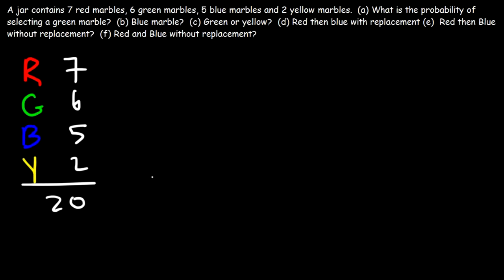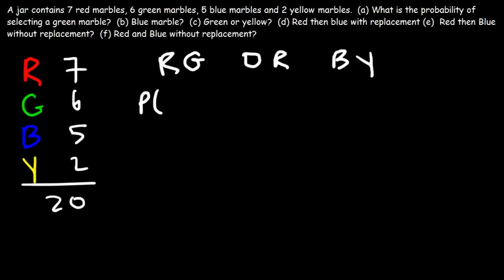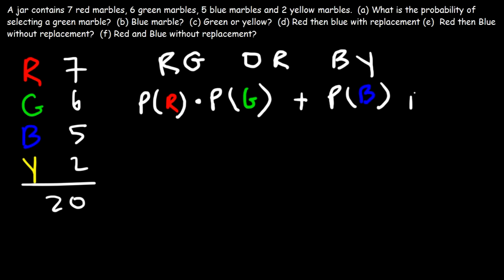Here's a question: What is the probability of selecting a red marble and then a green marble, OR getting a blue marble and then a yellow marble on the second try? The probability of getting red and green requires multiplication: P(R) times P(G), and the OR means we add that to P(B) times P(Y). Since it's with replacement, the denominator remains 20 throughout.